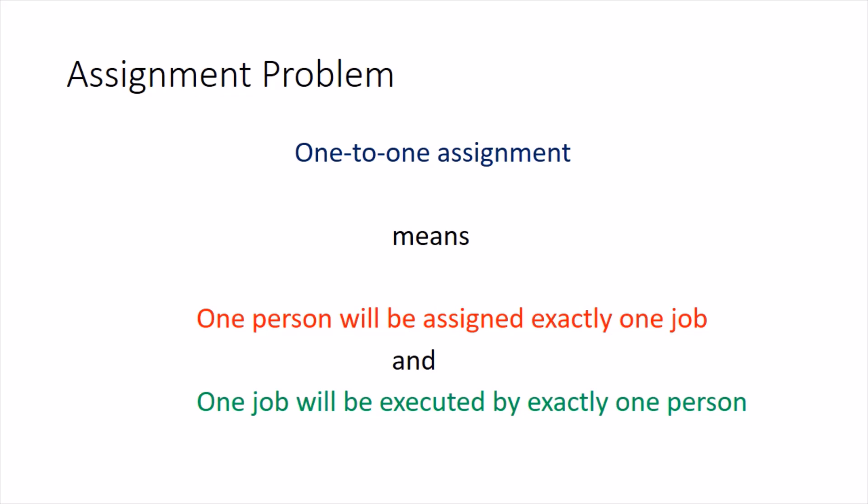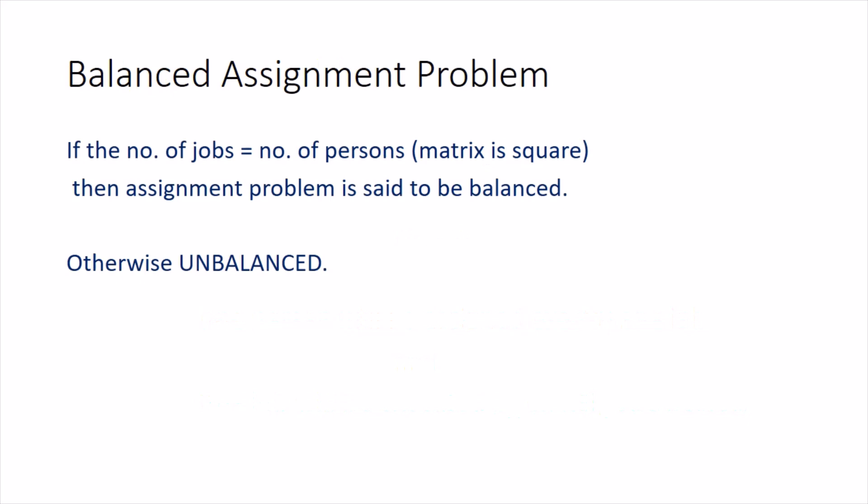Now comes the definition of balanced assignment problem. If the number of jobs is equal to number of persons, that is the matrix is square, you will soon see the matrix structure, then assignment problem is said to be balanced otherwise unbalanced.